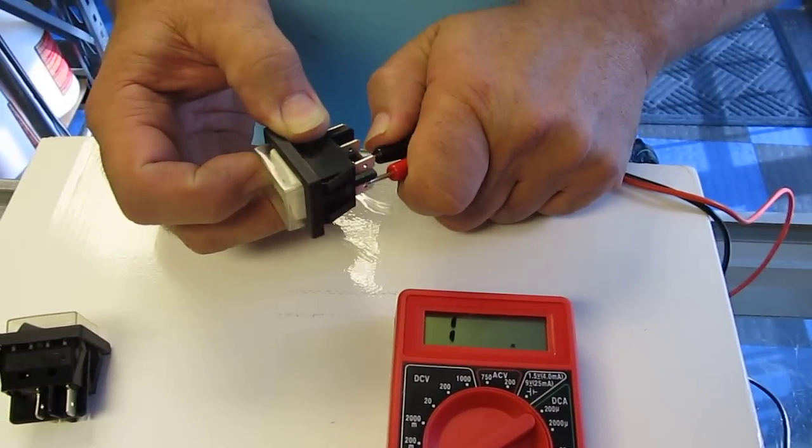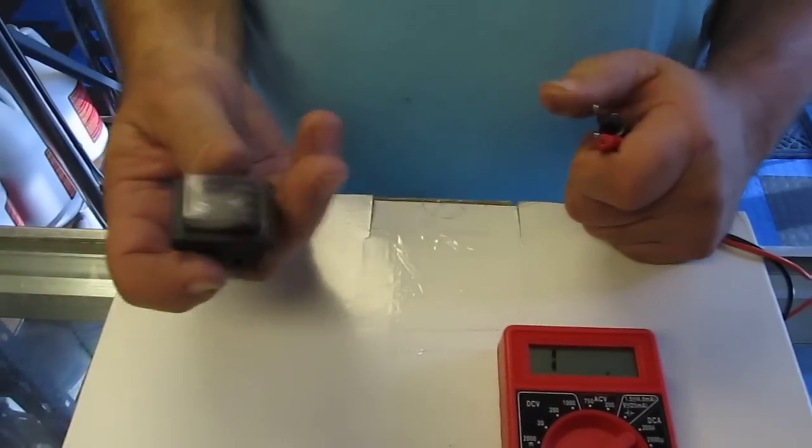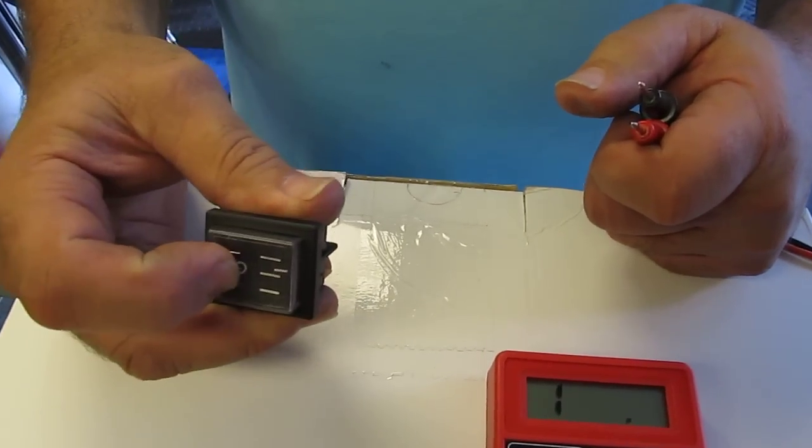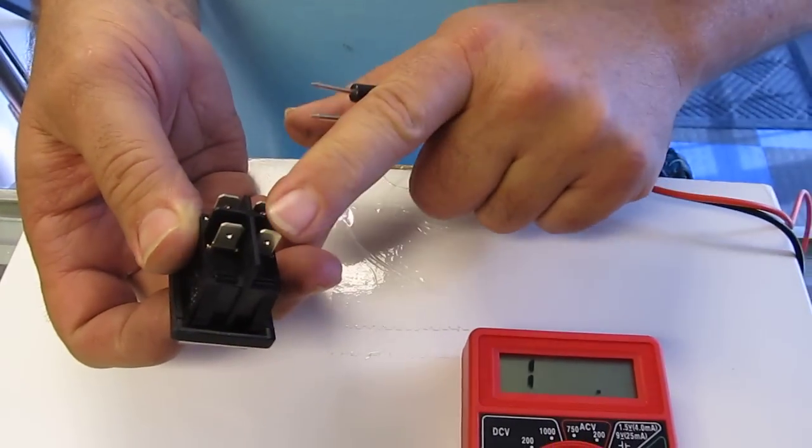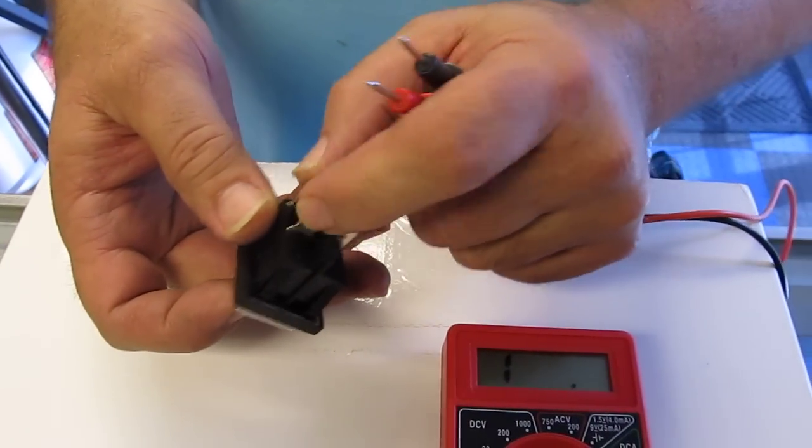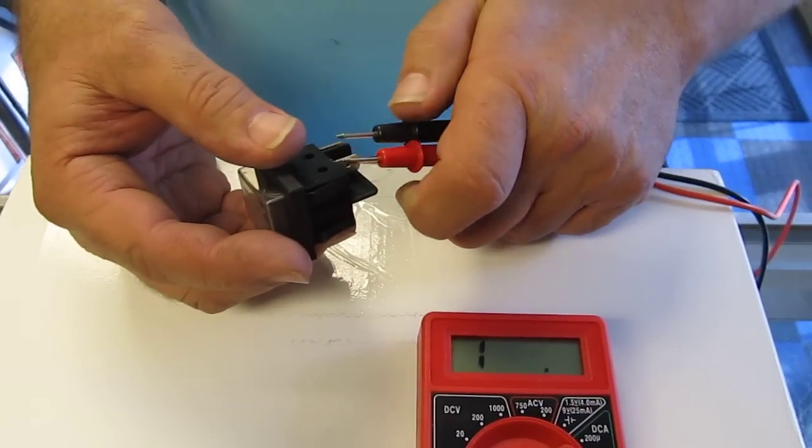And these two would be on this direction and off. And on a simple two-position switch, it's just either on or off. And these two are one switch and this is like a second switch over here. So you can switch two things or you can switch both wires on one motor or item.